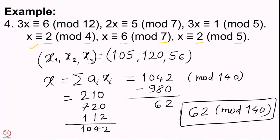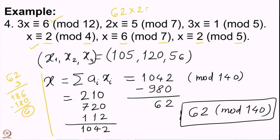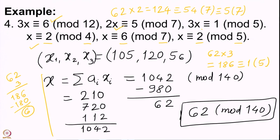Let us also verify against the original congruences. 62 × 3 = 186, and removing multiples of 12, we get 186 − 180 = 6 mod 12 ✓. Then 62 × 2 = 124, and 124 mod 7: since 124 − 119 = 5, we get 5 mod 7 ✓. Finally, 62 × 3 = 186, and 186 mod 5 = 1 ✓. All congruences are satisfied, confirming our answer of 62.